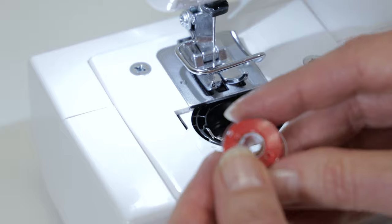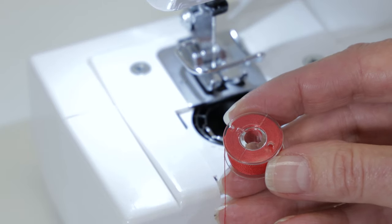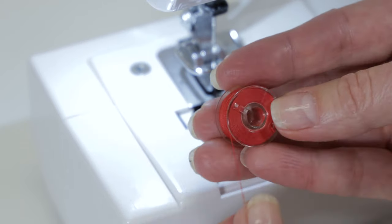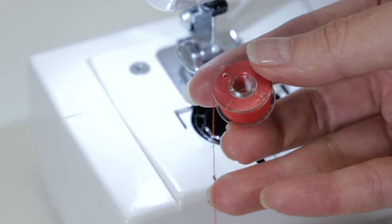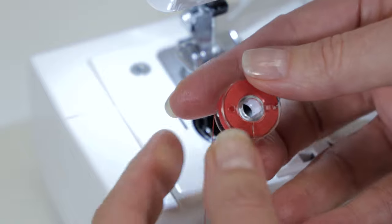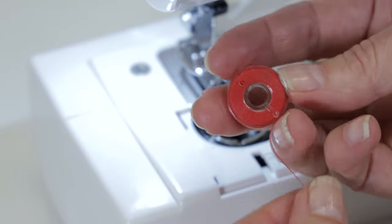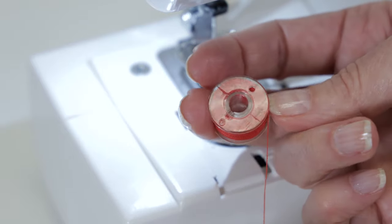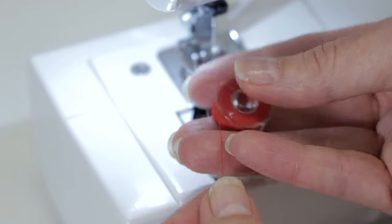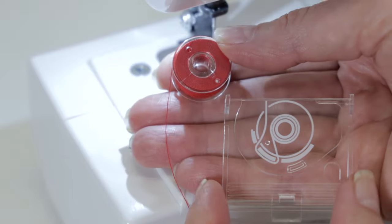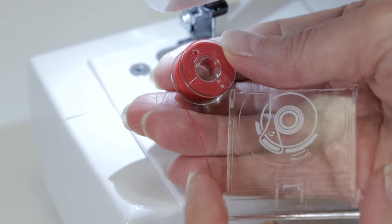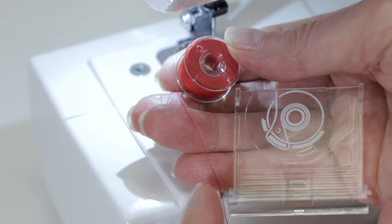Now that we've wound a bobbin, we're ready to insert the bobbin into the machine. Hold the bobbin so that as you pull the thread, it comes off the bobbin counter-clockwise. If it's turning clockwise, that's incorrect. You'll want to turn it around so that it's turning counter-clockwise. And as a reference, you can check your bobbin cover plate, and it shows you the correct way that the bobbin should be placed in the machine.